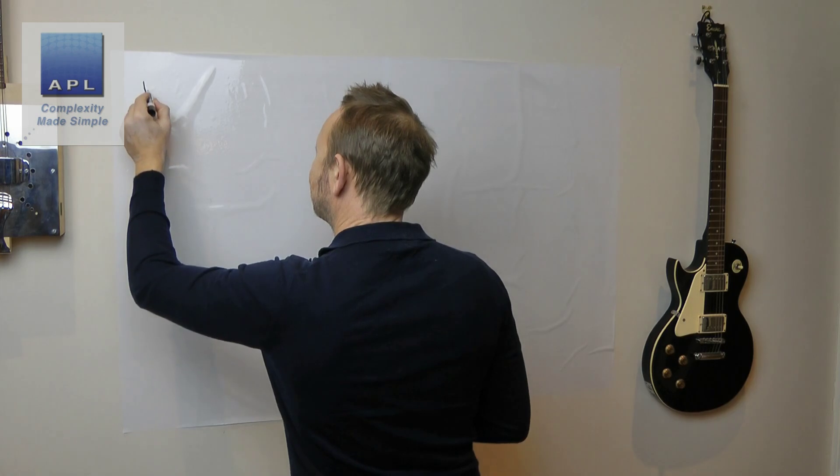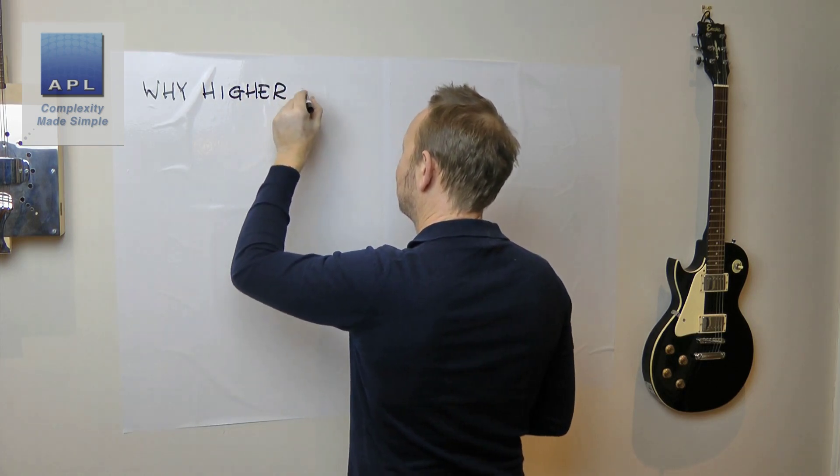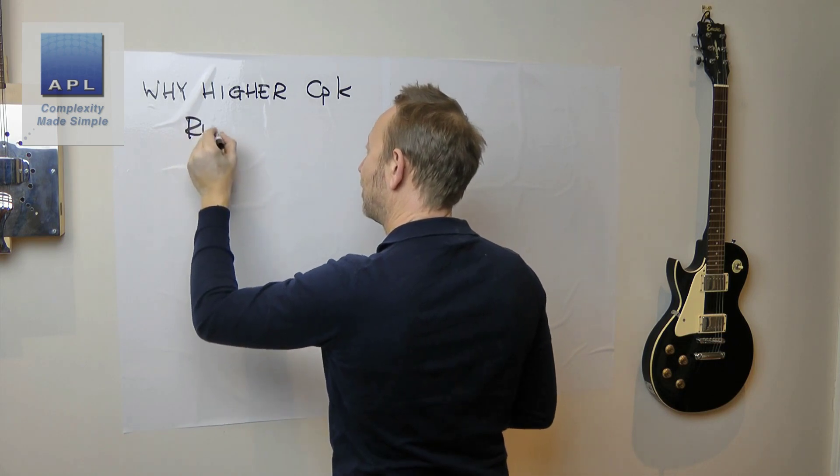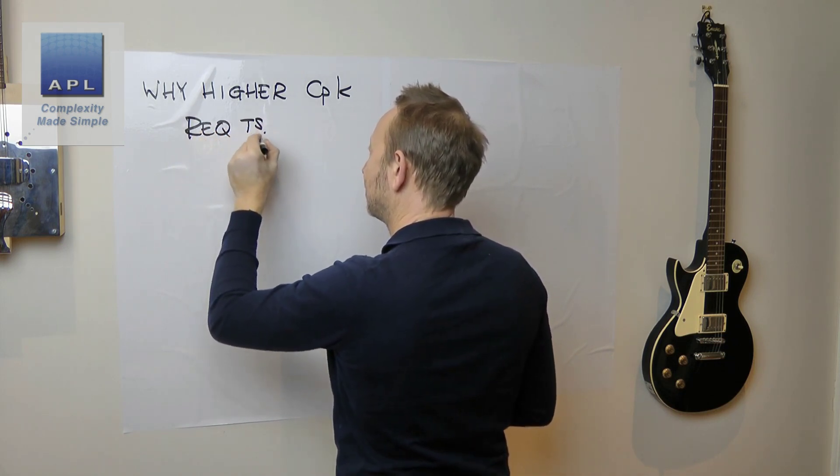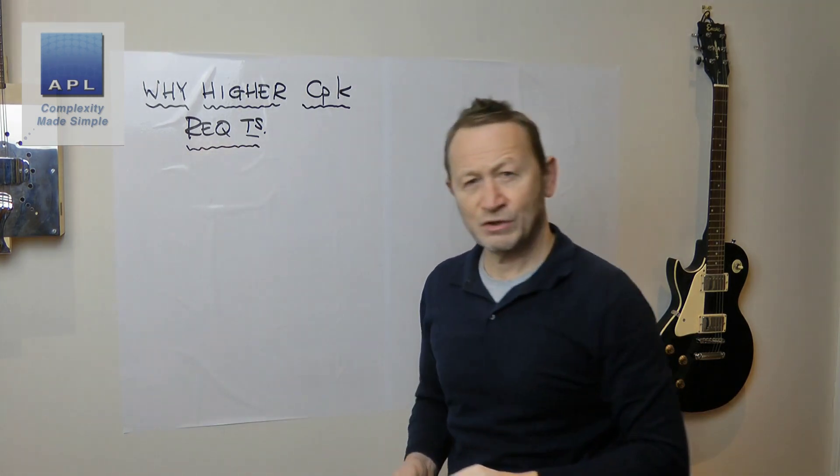What VJ is asking me about is why we ask for CPKs at the higher levels. His question is slightly broken with a little bit of broken English, but I think what he's asking is, we have the 1.33 limit that lots of people ask for, we have the 1.67 that people ask for, why do we go above that? So the question essentially is, why do we have higher CPK requirements?